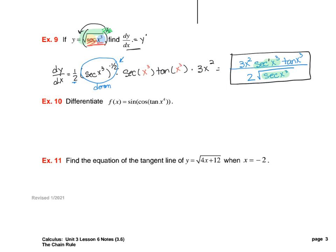The next one — taking the derivative of all of this stuff — remember starting on the outside and working our way in through all of the layers. My outside function is the sine. Then we go to the cosine. Then we go to the tangent. And then finally we go to the x to the fourth. So we have to work our way through all of that. My derivative, f prime of x, is the derivative of the sine first, which is cosine. And remember all of this stuff copies — the cosine of the tan of x to the fourth.